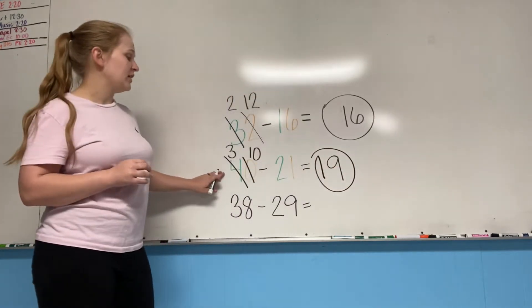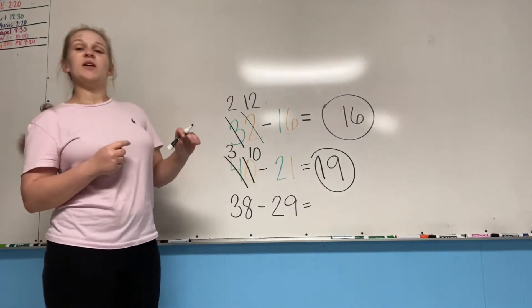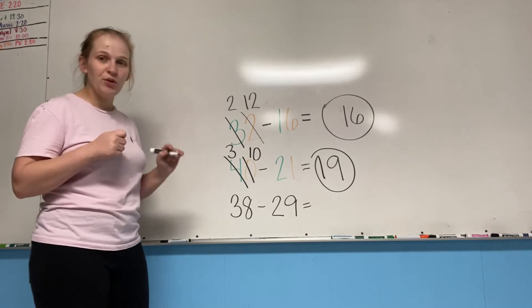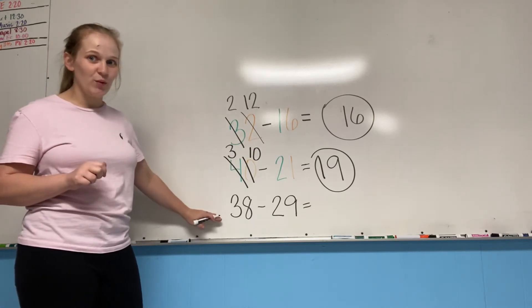So 40 minus 21 equals 19. You guys kind of get how it works now that we've done some color coded ones. Awesome. Let's give it a shot with this all black one.